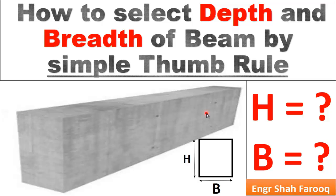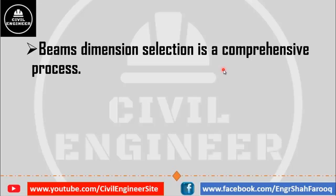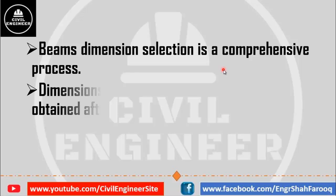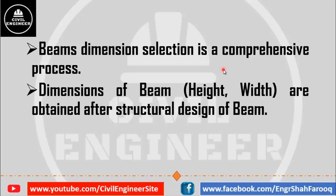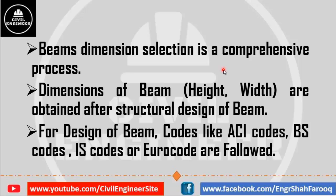Hello dear friends, welcome back to your YouTube channel Civil Engineer. In this video we are going to discuss a simple thumb rule for selection of depth and width of beam. Beam dimension selection is a lengthy process, and dimensions of beams — width and height — are obtained after structural design of the beam. For structural design, certain codes like ACI (American Concrete Institute), British Standard, Indian Standard, or Euro codes are followed.